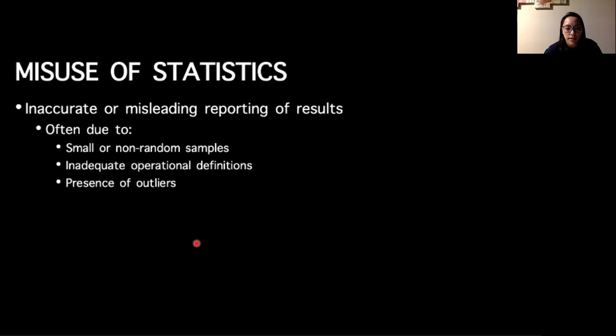The last part of this lecture that I wanted to talk about is the misuse of statistics. So this is inaccurate or misleading reporting of results. Oftentimes this could be due to small or non-random samples. So the sample should be a good chunk of people or a good size of people. If we only had three people and we said the average weight lifted is this number, right?